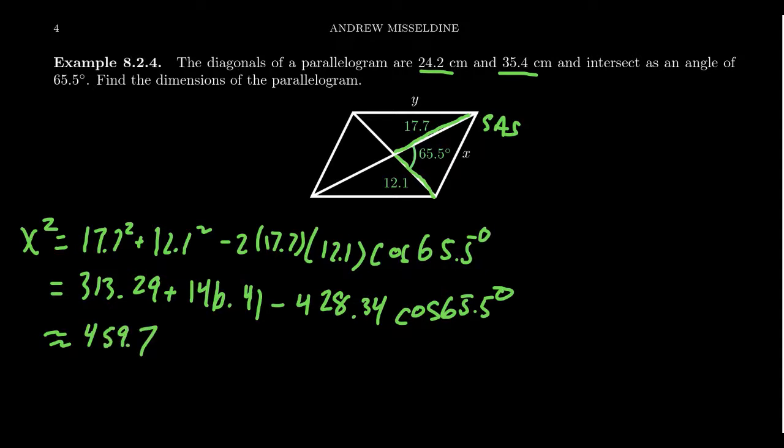And then we plug in cosine of 65.5 into our calculator, times that by the 428.34. We're going to get negative 177.63, which then gives us 282.07.